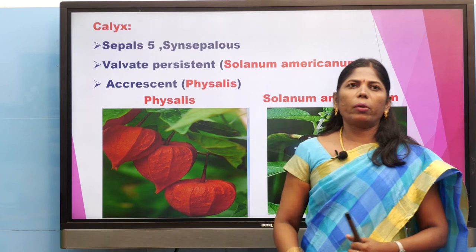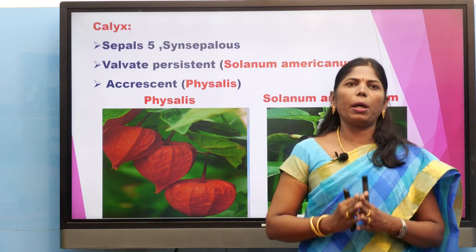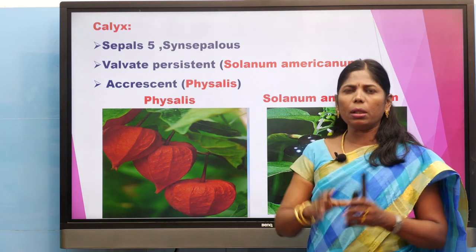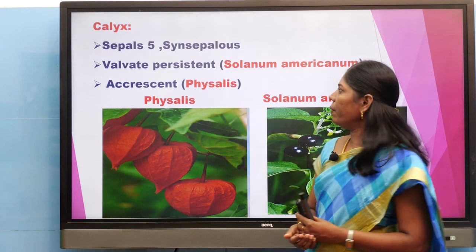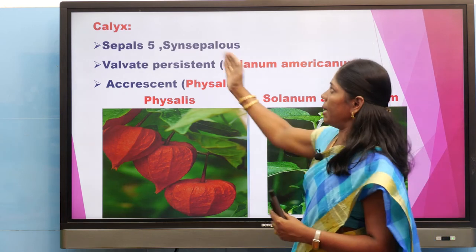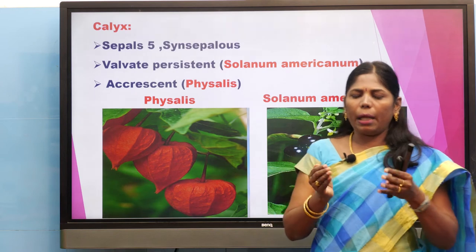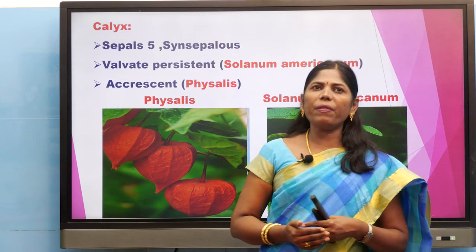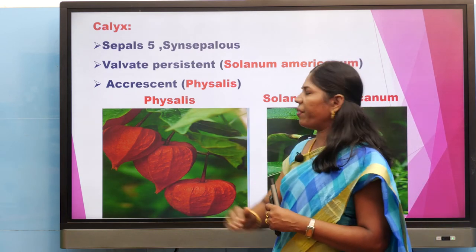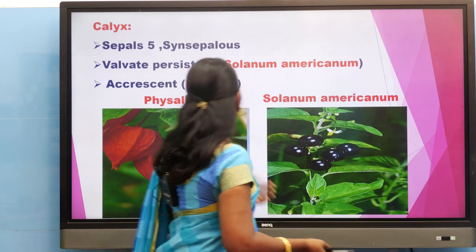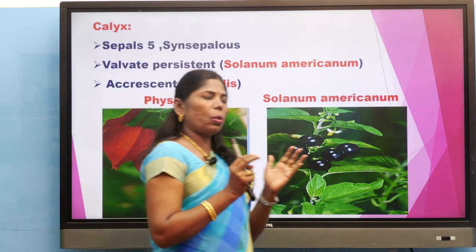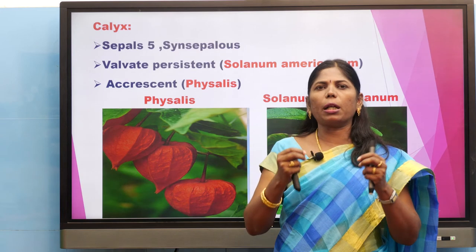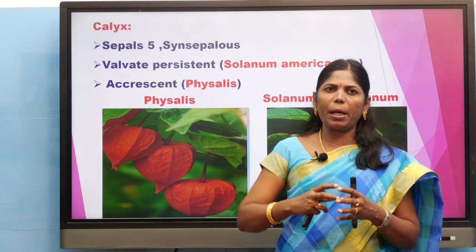The calyx has 5 sepals that are synsepalous (united). Arrangement is valvate — the sepals just touch one another without overlapping. The calyx is persistent — example Solanum americanum. Another type is accrescent in Physalis — the calyx totally covers the fruit; you have to open the calyx to see the fruit. Physalis is called 'chodak thakali' in Tamil.